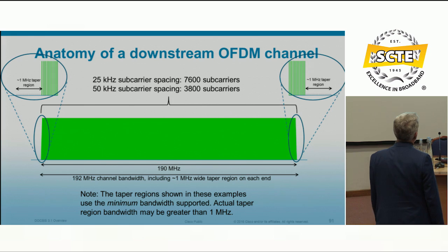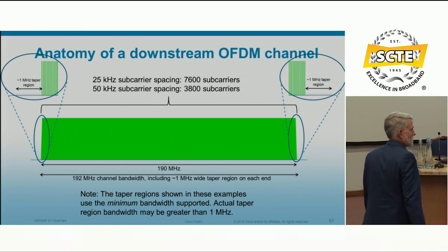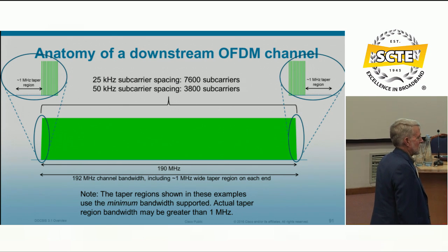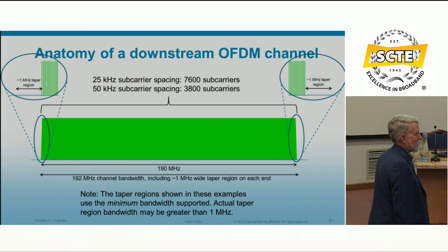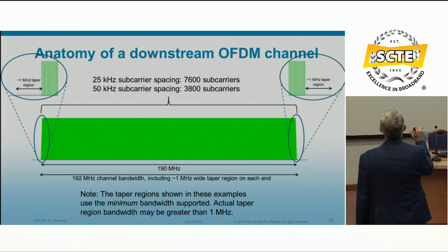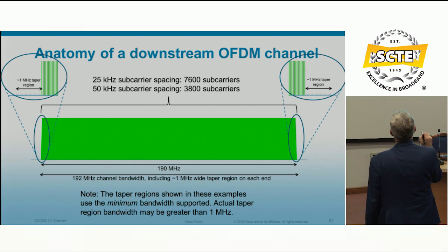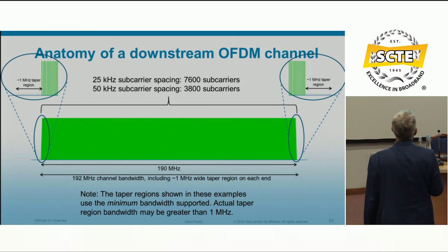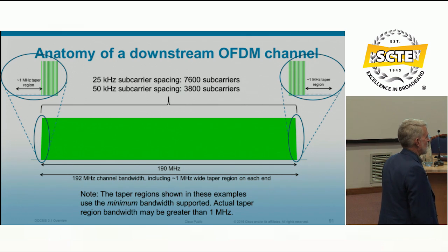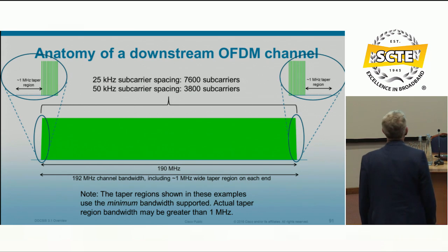The minimum taper region on each end of the downstream channel must be at least 1 MHz per the DOCSIS 3.1 spec; it can be more depending on the roll-off factor configured in the CMTS. Excluded subcarriers in the taper region are turned off.